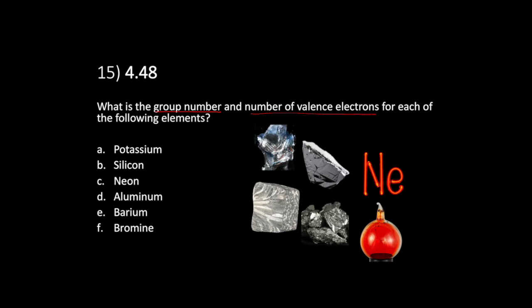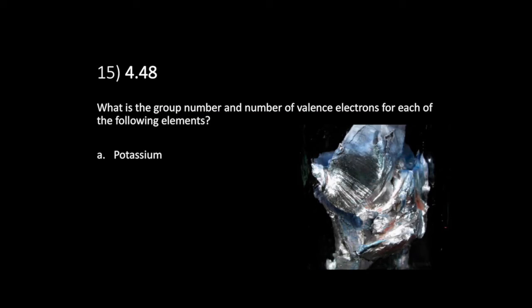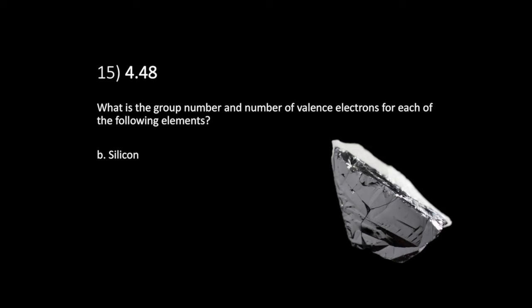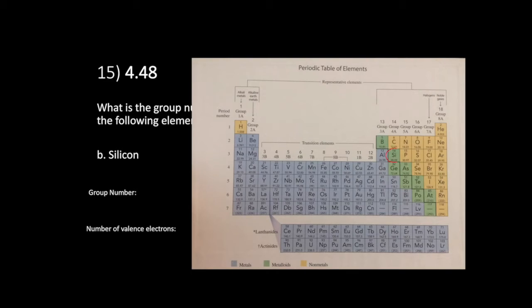Chapter 4, question 15 is the same sort of thing — they're asking for the group number and the number of valence electrons for different elements. First, potassium: the symbol is K, on the left side of the periodic table in group 1A. It has one valence electron — that one dot symbolizes the electron in the outermost layer of a potassium atom.